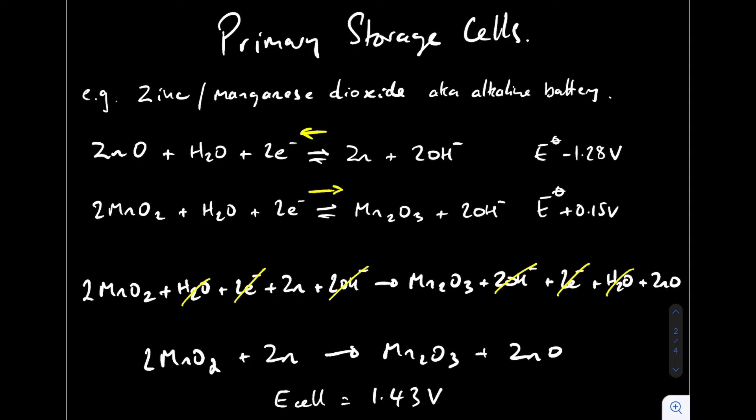The only other thing to say really here is which will be the positive terminal, which will be the negative. The more positive standard electrode potential will be the positive pole for the battery, so that's going to be your positive electrode and that's going to be your negative one.